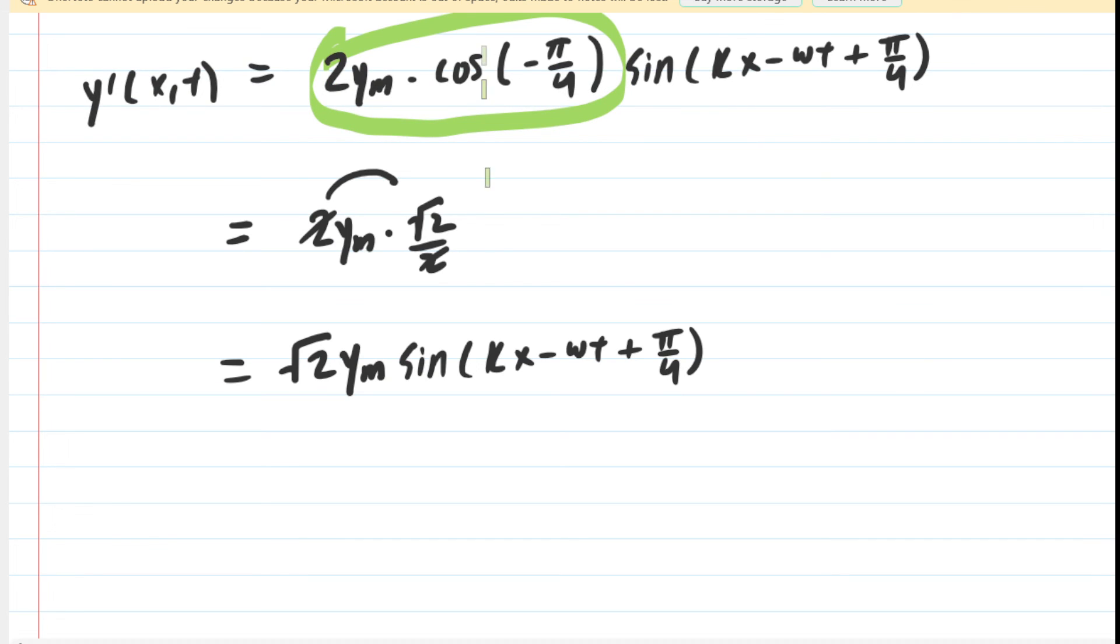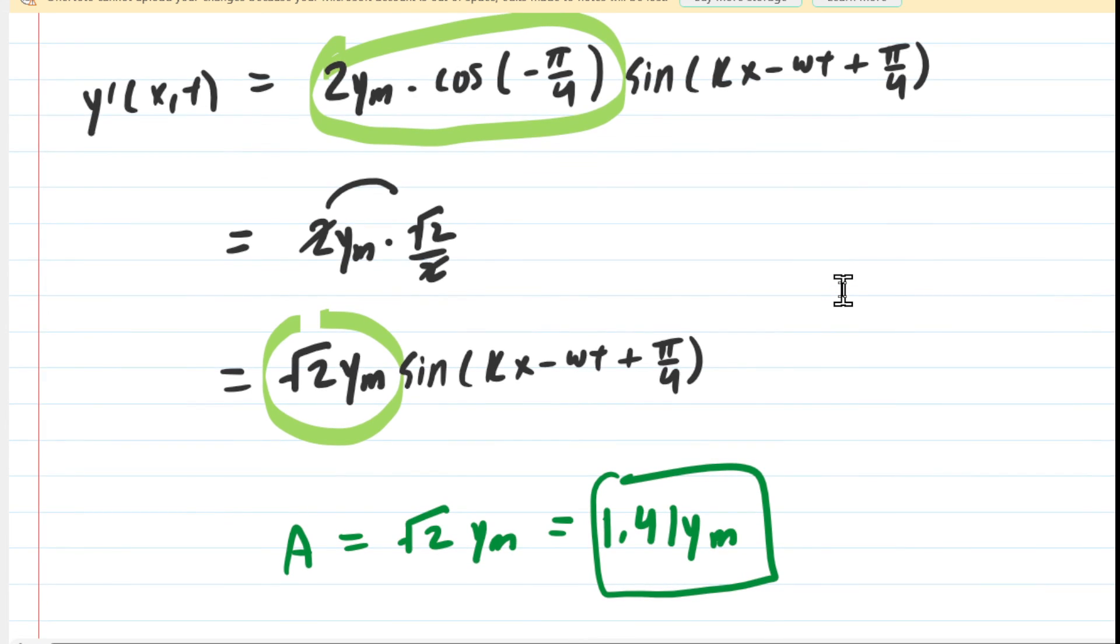Capping off the question, we know it's asking us for the amplitude. That is the amplitude right there. We could say that the amplitude is √2 multiplied by y_m. You can also simplify the √2, which is approximately 1.41, so you could also answer it as 1.41 times y_m. That is the correct answer for the amplitude of this resultant wave.